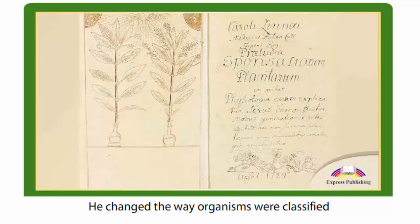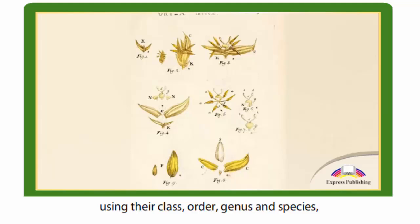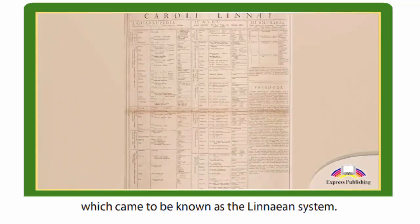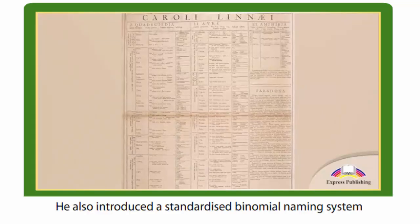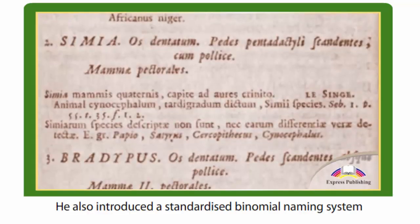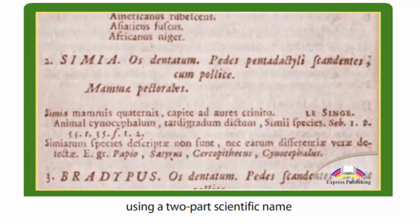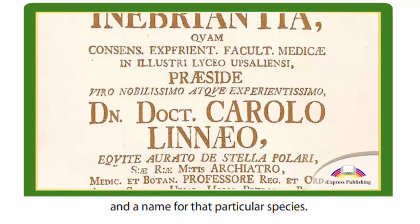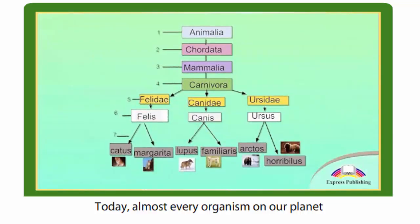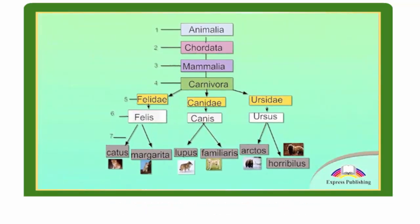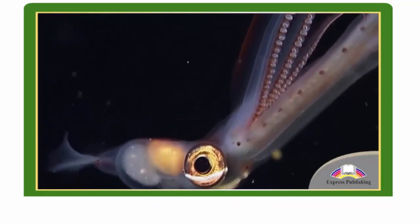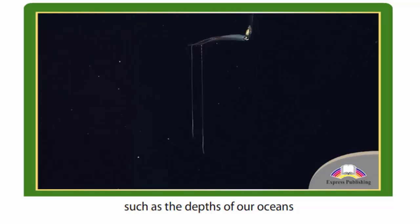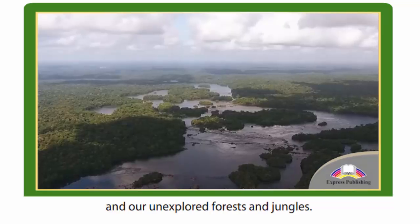He changed the way organisms were classified using their class, order, genus, and species, which came to be known as the Linnaean system. He also introduced a standardized binomial naming system using a two-part scientific name made up of the genus and a name for that particular species. Today, almost every organism on our planet has a scientific name. However, there are still some places that harbour unknown species, such as the depths of our oceans and our unexplored forests and jungles.